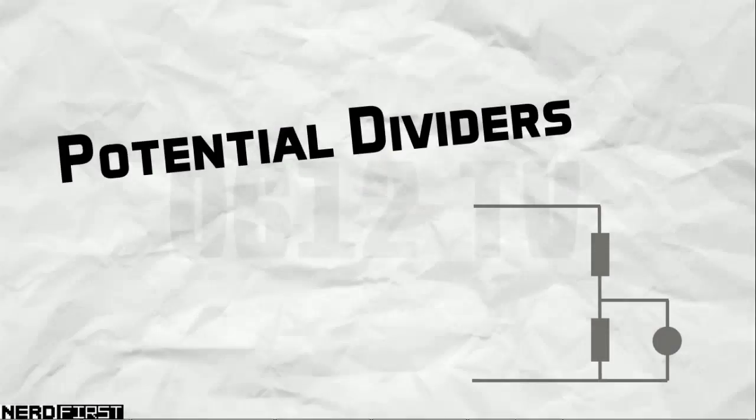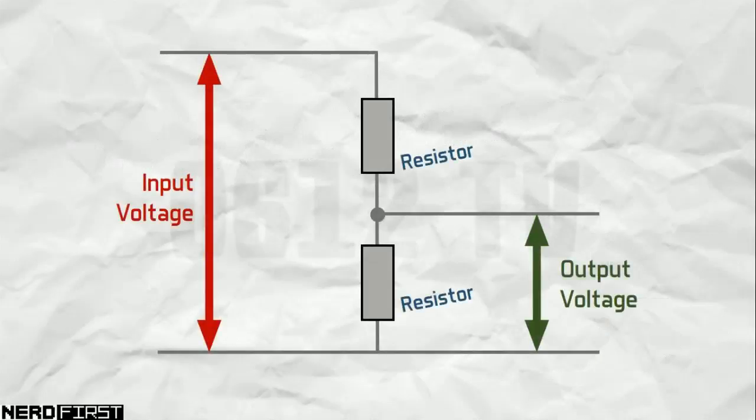A potential divider is a simple but very useful circuit which allows you to obtain a lower voltage from a higher voltage source by using just two or more resistors. In this video, we explore the potential divider and see how easy it is to build a potential divider circuit.